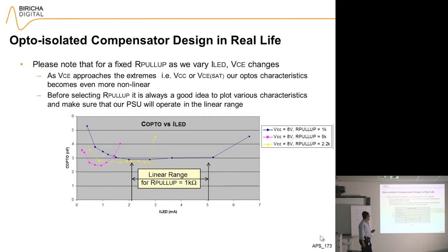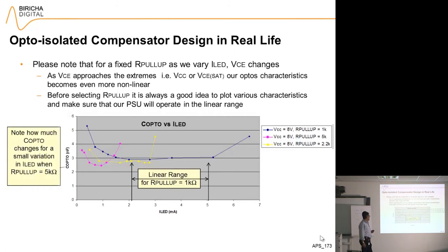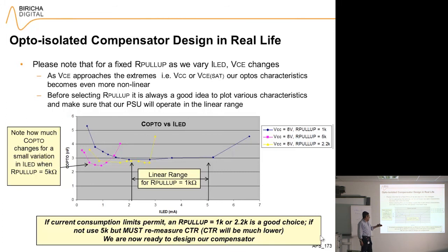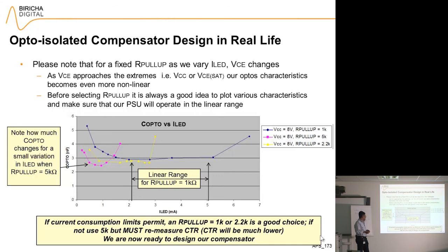That's the linear range for a pull-up resistor of 1k. For 5k you can see you've got huge variation. So if current consumption permits, you can use a pull-up of 1k or 2.2k. If not, then you must use 5k, but you must measure the CTR — CTR will be much lower and it will be a lot more nonlinear.